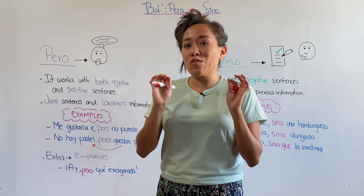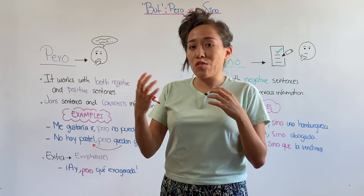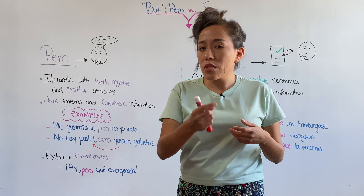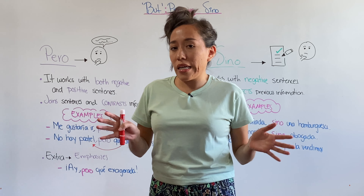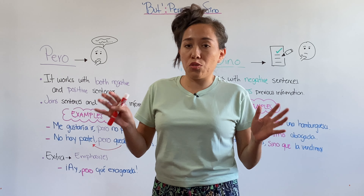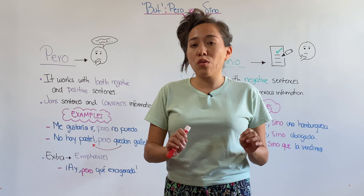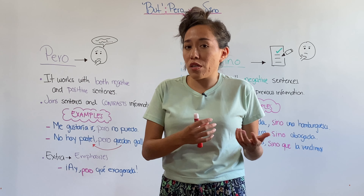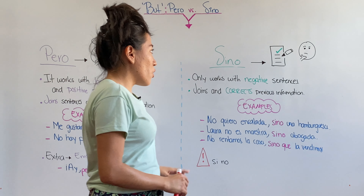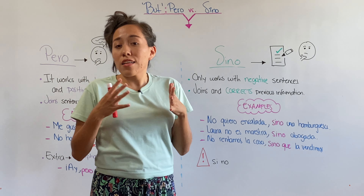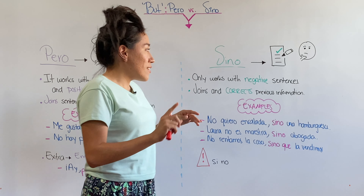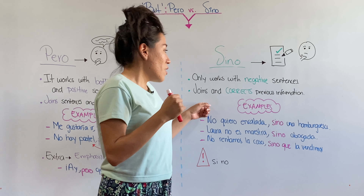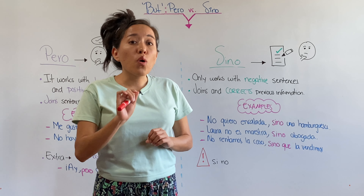This word allows us to join sentences and create a contrast between the information. For example: 'me gustaría ir pero no puedo' — I would like to go but I can't. Example two: 'no hay pastel pero quedan galletas' — there is no more cake but there are some cookies left. The information after 'pero' creates a contrast with what was just said. This is when you use 'pero' in Spanish: when you want to give contrasting information.